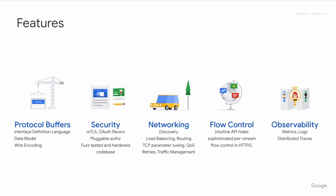I'll switch gears and talk a little bit about some of the classes of features that come with gRPC. I'll start with protocol buffers. Protocol buffers provides the interface definition language, the basis for data modeling in applications, and the wire protocol for encoding and transmitting actual application data. If people choose, they can actually use gRPC with other alternate solutions instead of protocol buffers, although protobuf is probably the most heavily used layer.